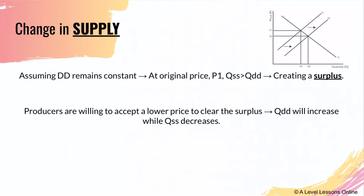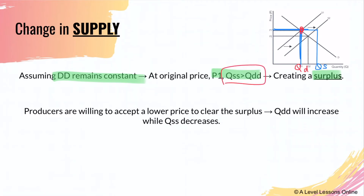Assuming demand remains constant this time, at the original price P1, quantity supplied will now be more than quantity demanded, hence creating a surplus. At original price P1, you draw a line out - the supply quantity is where it intersects the supply curve, and quantity demanded is where it intersects the demand curve. Quantity supplied is more than quantity demanded, so it creates a surplus.